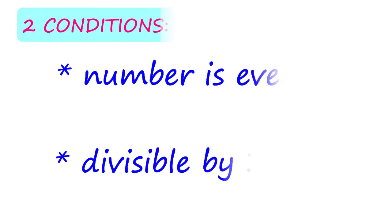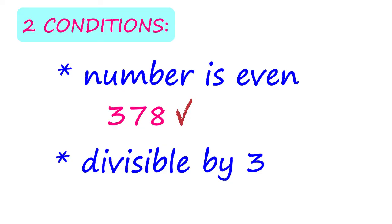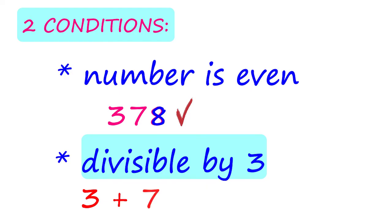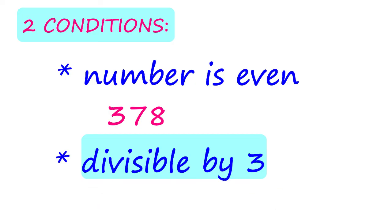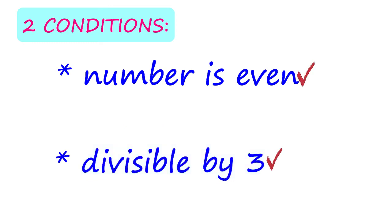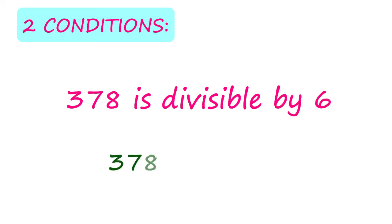Let's check 378. Is the number even? Yes, it is. Since the number is even, we continue to check if the second condition will be met — we find out if the sum of the digits could be divided by 3. Since 378 is even and it is also divisible by 3, then we can say that 378 is divisible by 6.